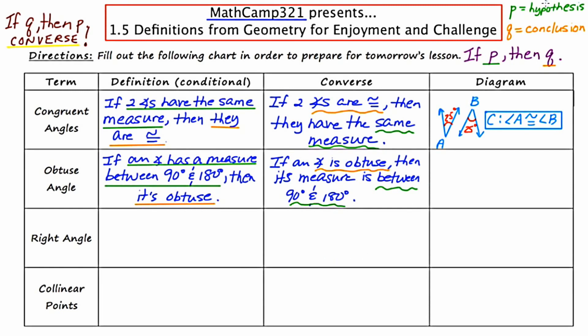Here's an illustration. Suppose you're walking through the geometry forest and you stumble upon an angle whose measure is 125. The conclusion you can make is that it must be obtuse.